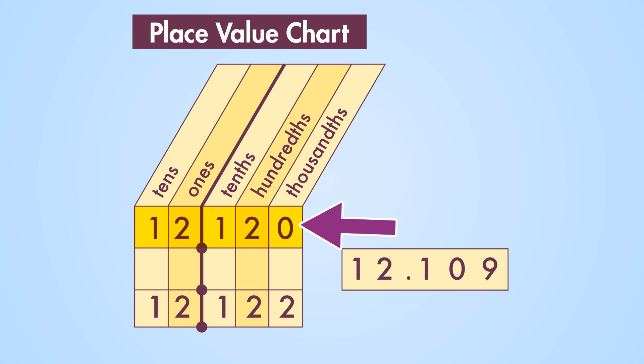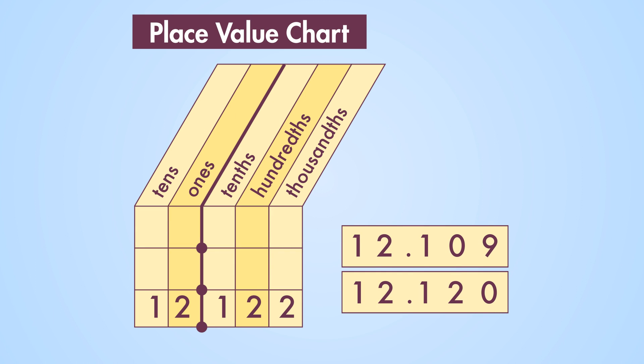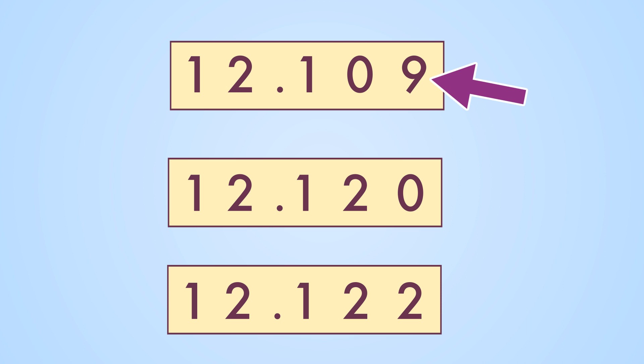So twelve and one hundred twenty thousandths is the lower number. So the numbers from least to greatest are twelve and one hundred nine thousandths, twelve and one hundred twenty thousandths, and twelve and one hundred twenty-two thousandths.